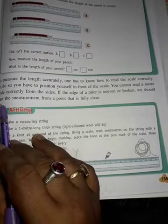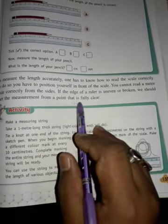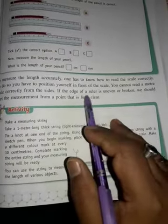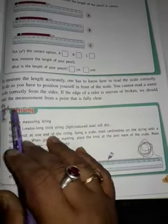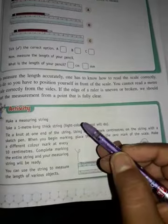we should start measuring from a point where the scale is intact. If your ruler is broken, measure from where the scale is exact.